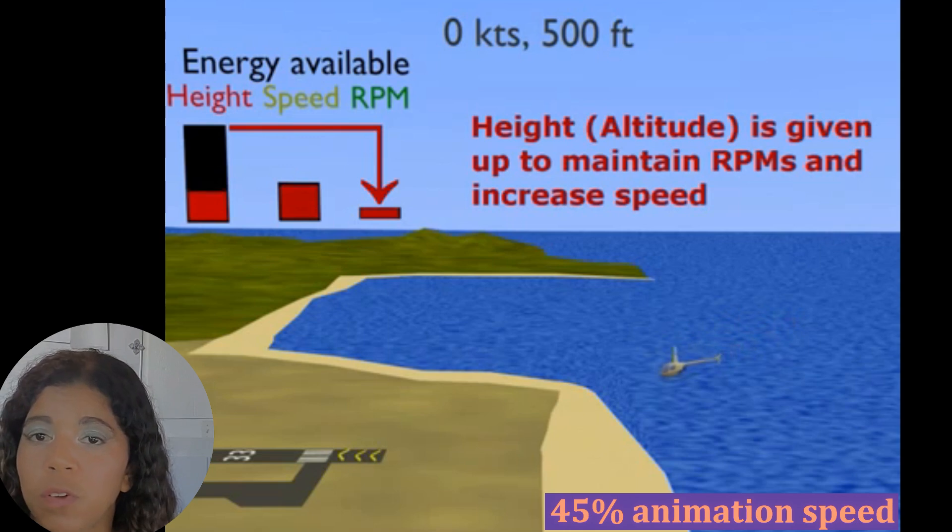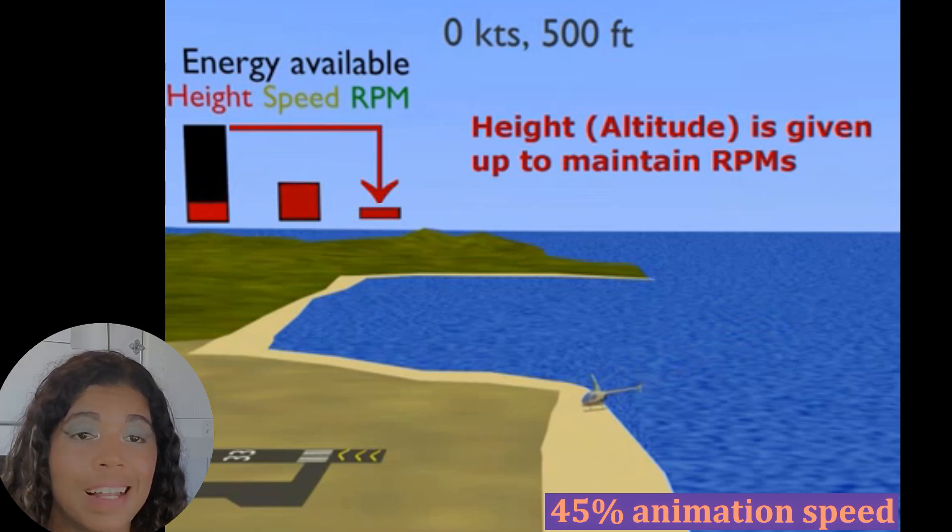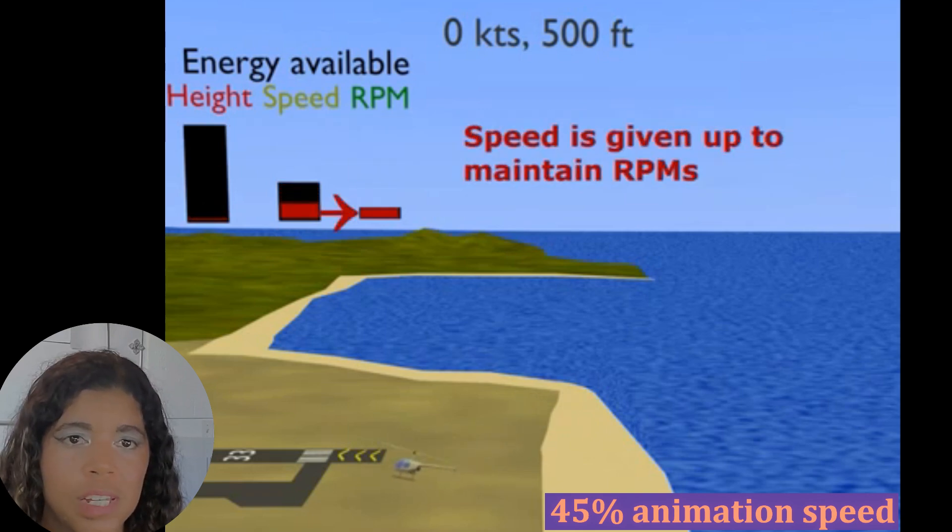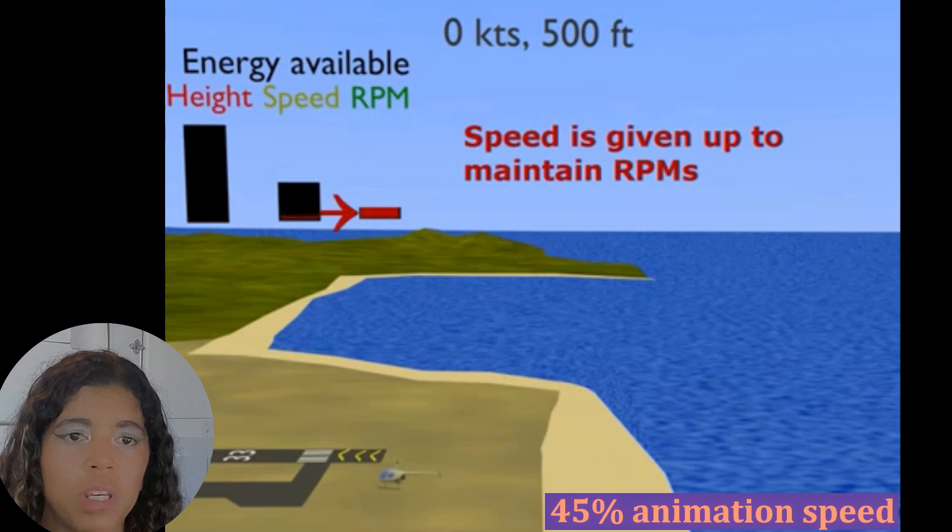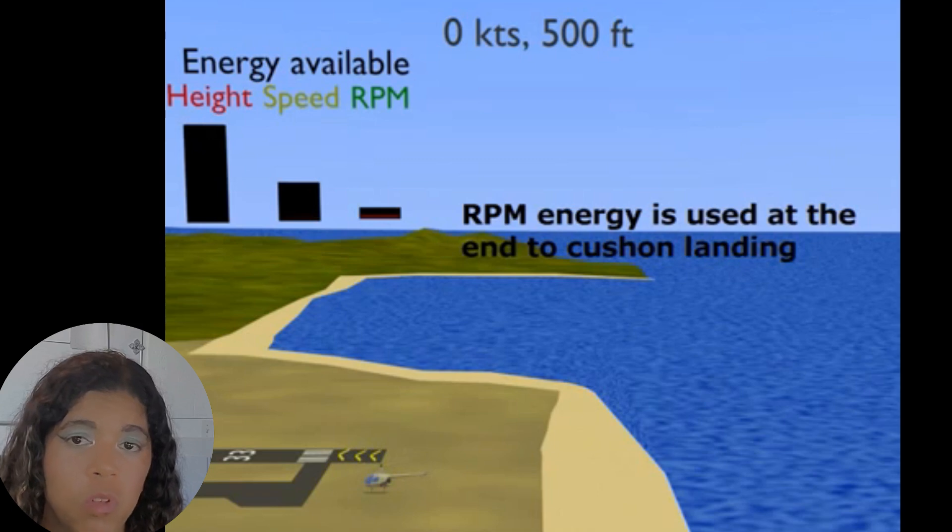Now that that speed bucket is filled up enough with energy we're in a similar situation to where we were in the last animation where we're giving up our height to maintain our RPMs and we have a reasonable speed moving forward. As we get closer to the ground once again like in the last animation our speed is used to maintain our RPMs and at the end once again we use those RPMs to cushion our landing and have a nice soft landing.